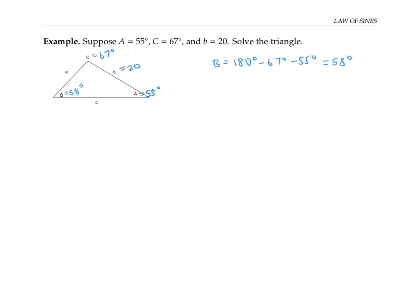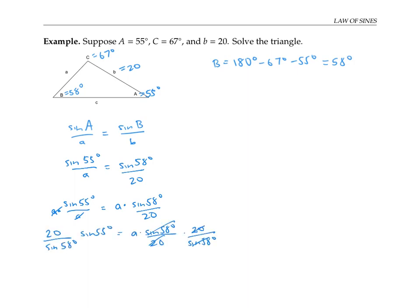Now I can use the law of sines to find my remaining side lengths. To find side a, I'll use the fact that sine of angle A over side length a is equal to sine of angle B over side length b. Since I already know three of these quantities—angle A, angle B, and side length b—I can plug in and solve for the unknown side length a. To solve, I'll multiply both sides by a, and then multiply both sides by 20 over the sine of 58 degrees. That gives me that a is equal to 20 sine 55 over sine 58, which works out to 19.32.